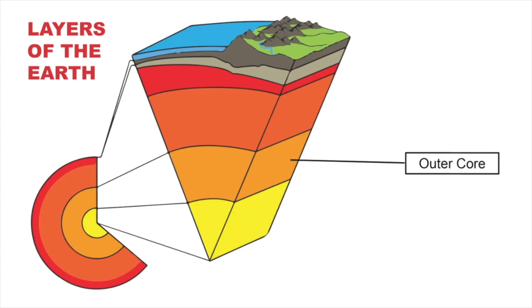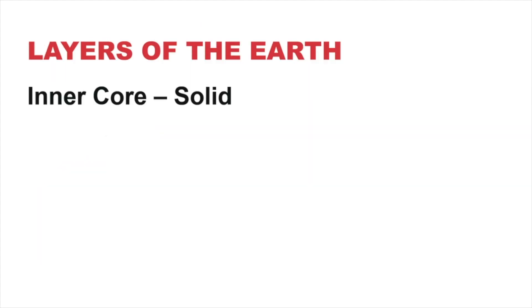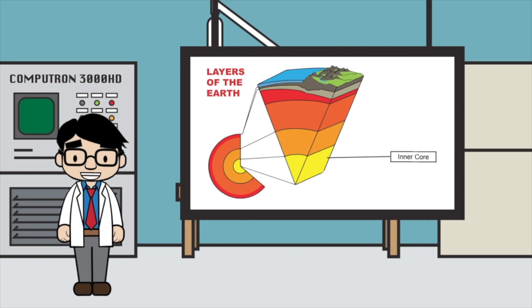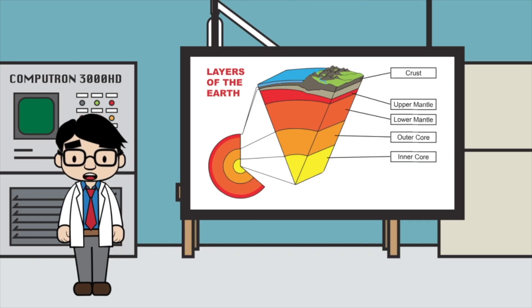The inner core is solid nickel and iron. To recap, it's crust, upper mantle, lower mantle, outer core, and inner core.